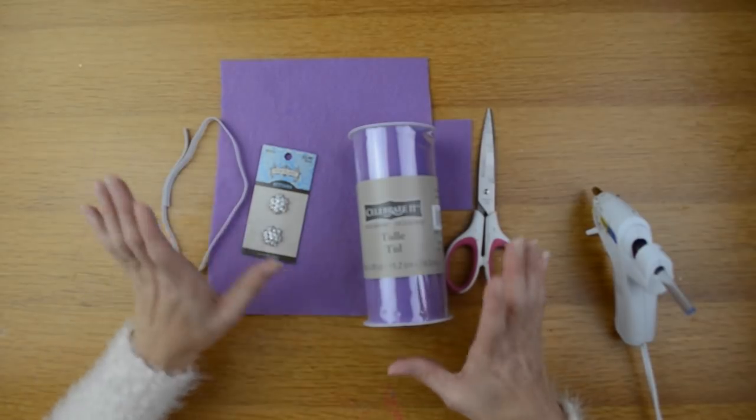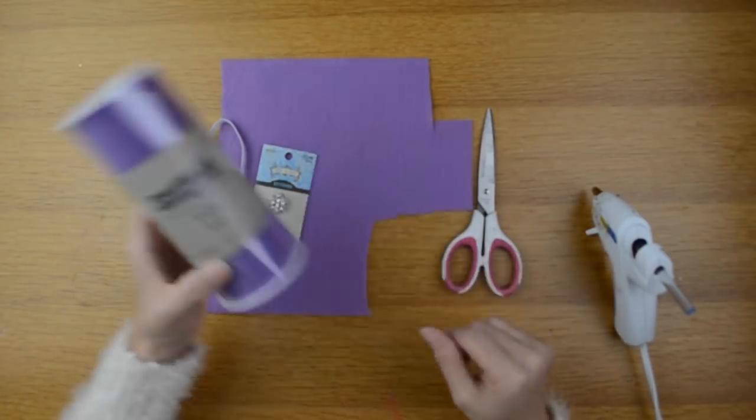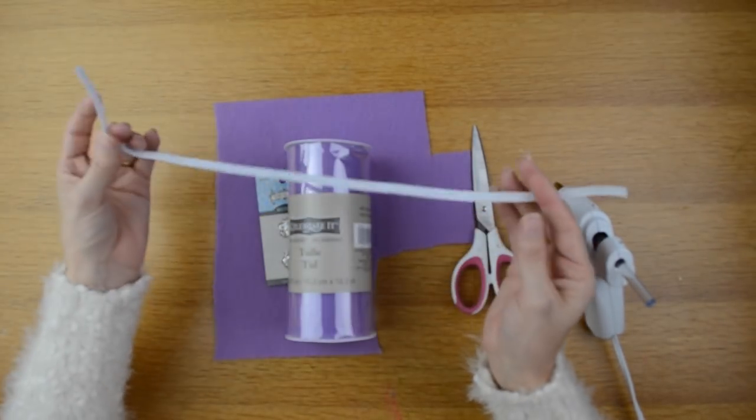To make this flower headband, you're going to need a few supplies. You're going to need some tulle in the color of your choice, and you'll need some elastic. I have cut this to 16 inches.